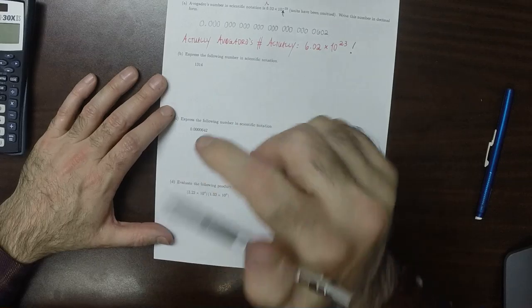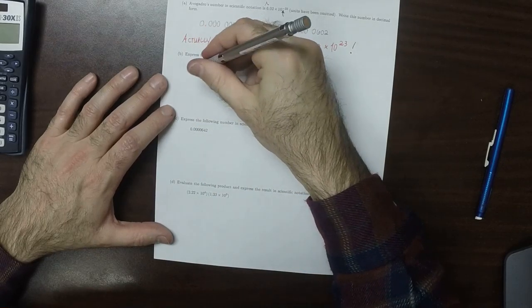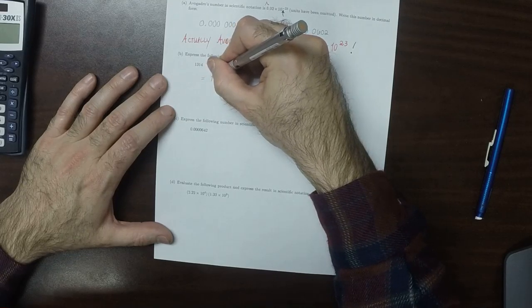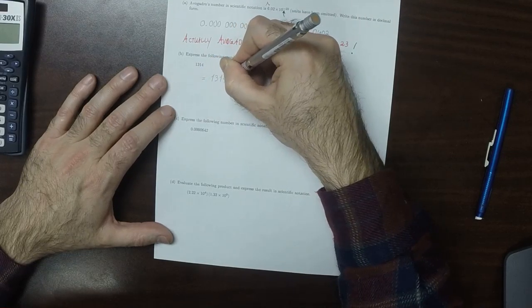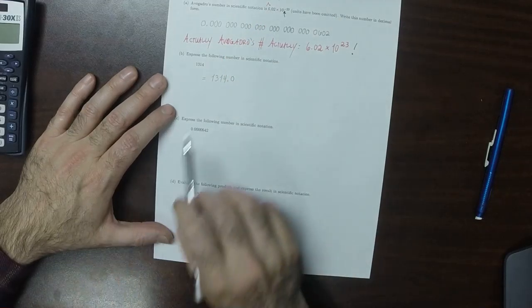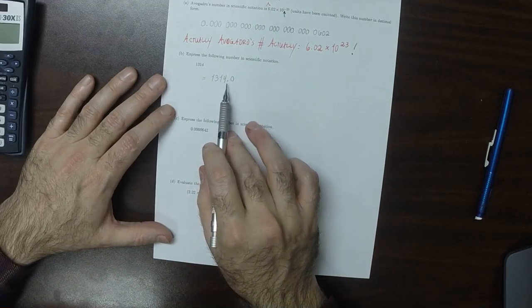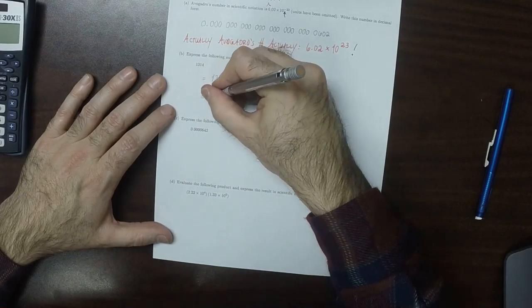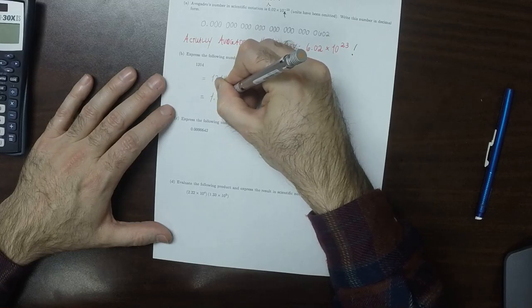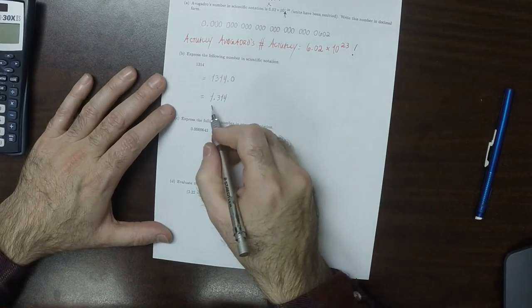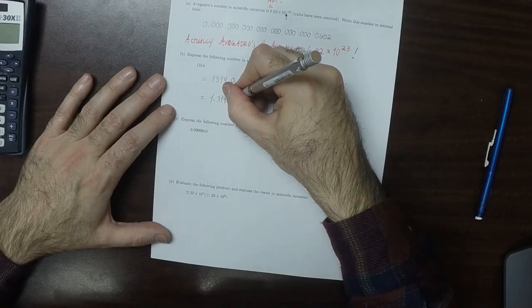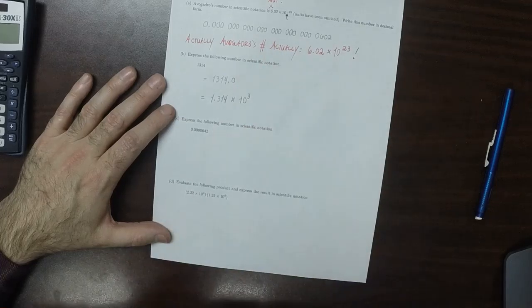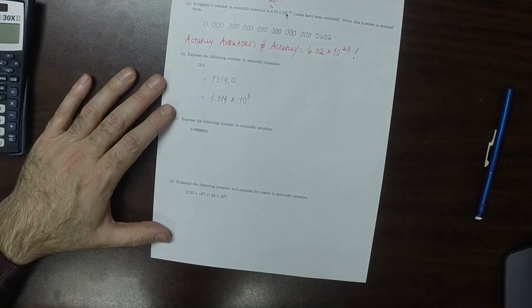Now express this number in scientific notation. This number could be written, for example, as 1314.0. In order for it to be in scientific notation, we need to move it three places to the left, so that it would be 1.314. And then this would be times 10 to 3 because we had to move it three places.